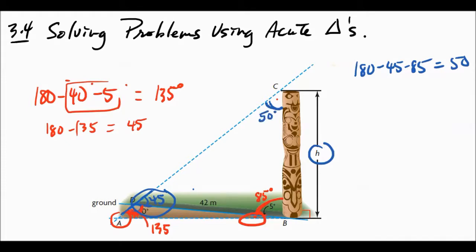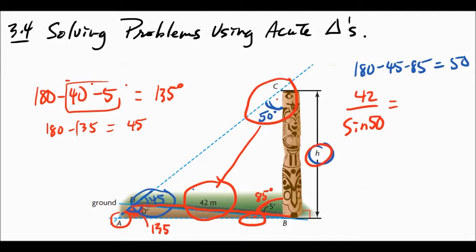I'm getting somewhere now. So now can I use the sine law? Because I'm really itching to use the sine law here. So this 42 should be right here, right? I have a pair. So I have 42 over sine 50. And then H is going to be opposite of this 45 here. So I do H over sine 45. Does that look great? You guys okay with that?